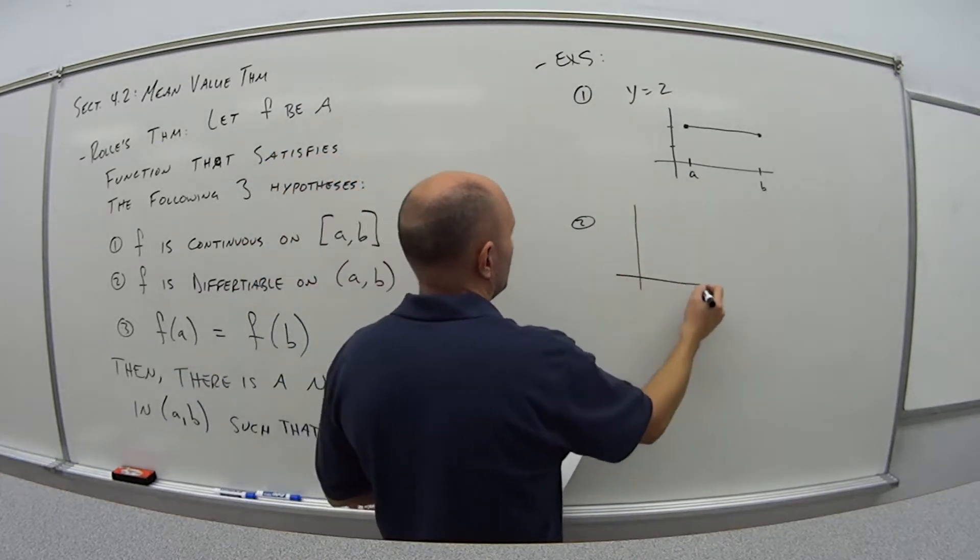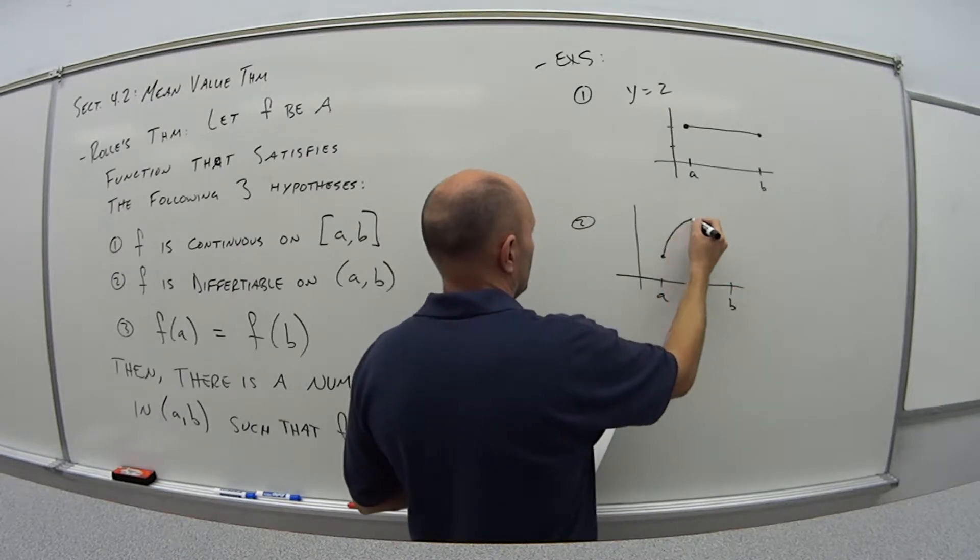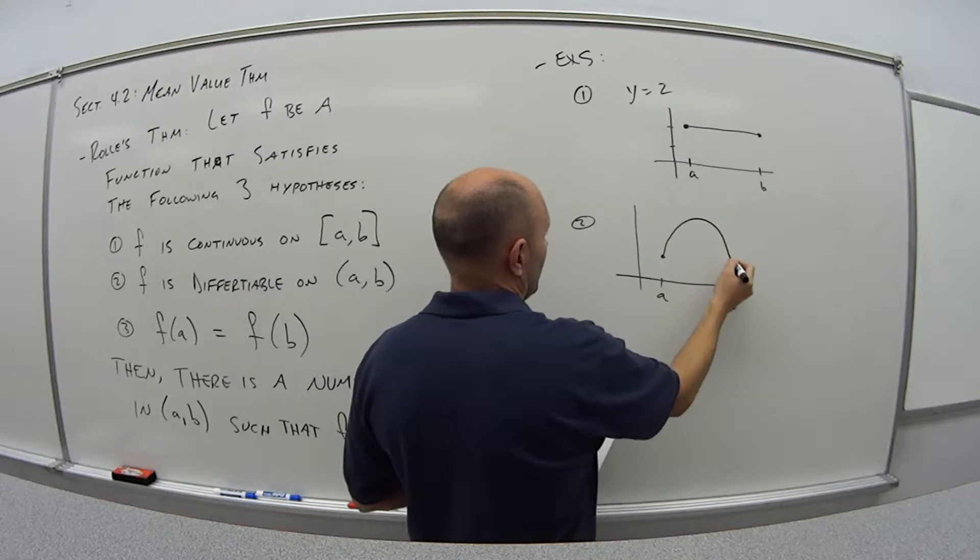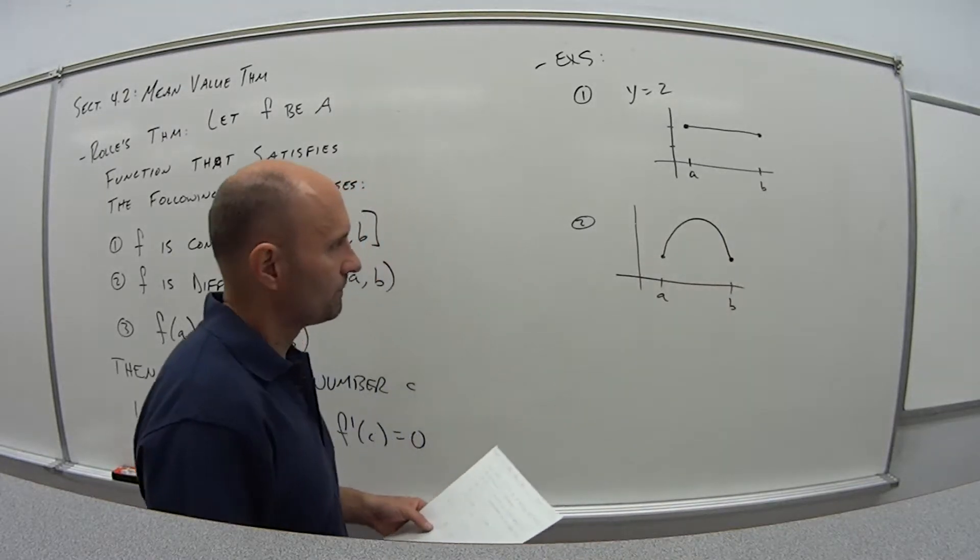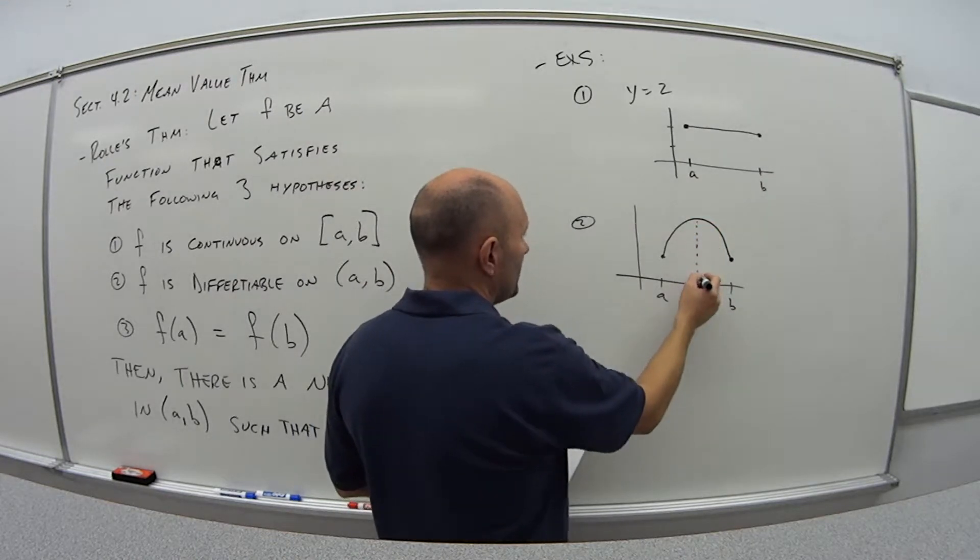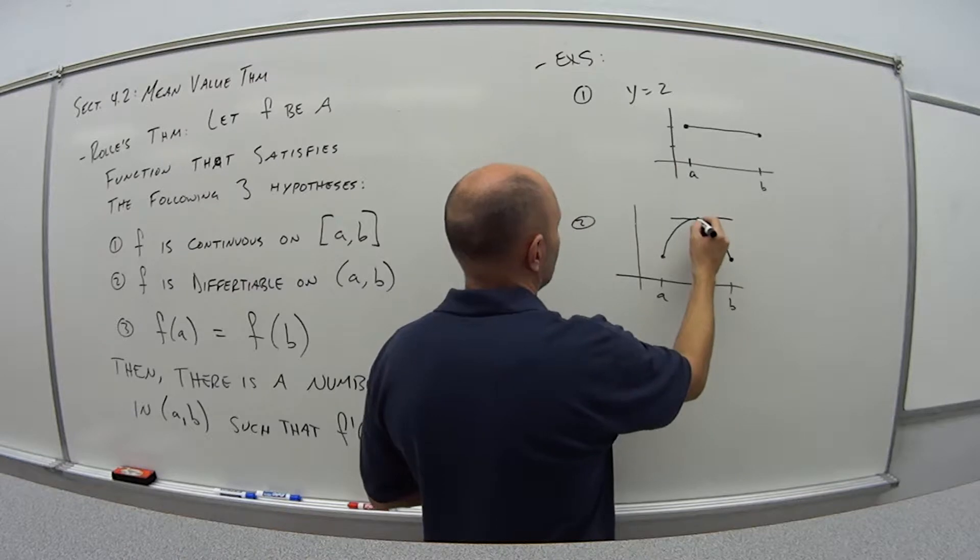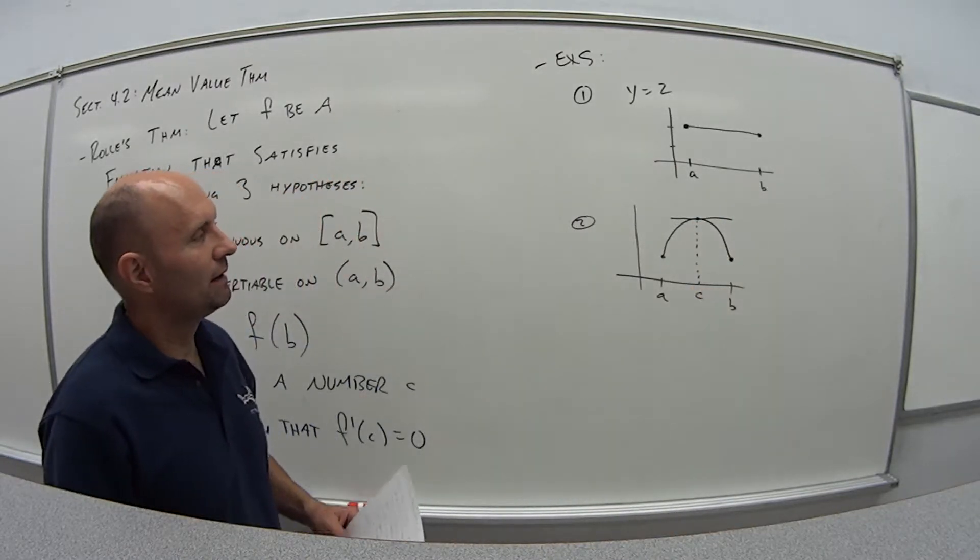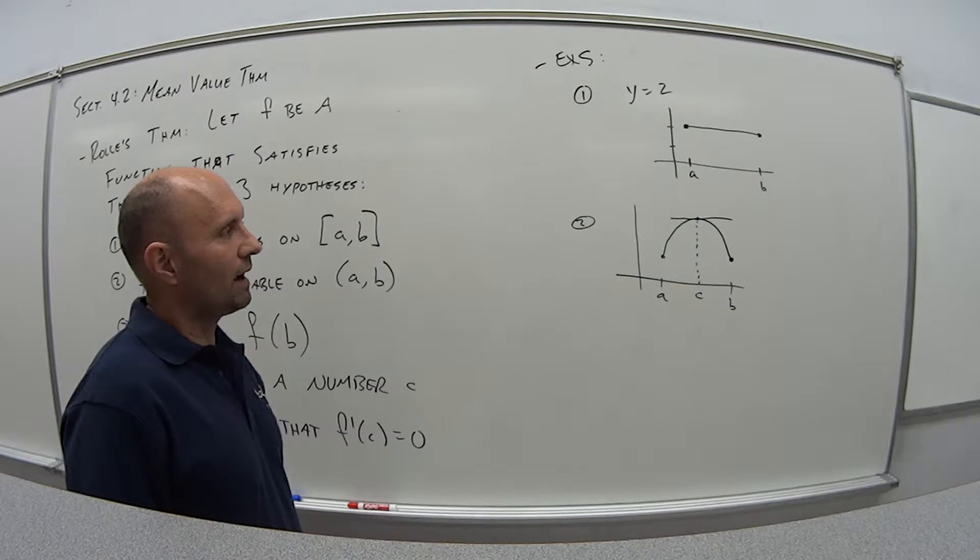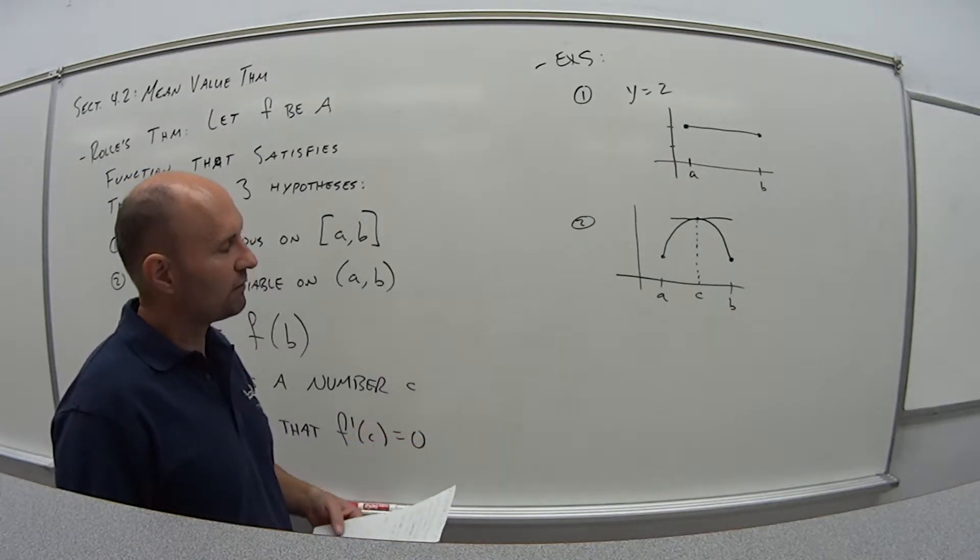I could have the following: Start at a, end at b, and I get something that looks like an upside down parabola. There's going to be some number c between a and b where the tangent line is horizontal, indicating there's a max or minimum, in this case the maximum.